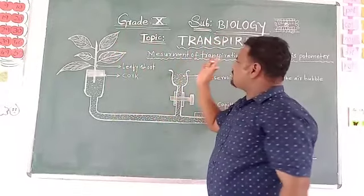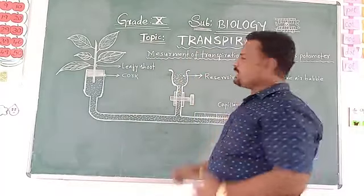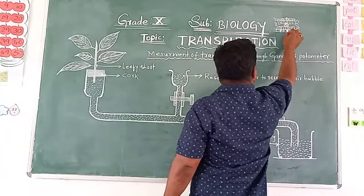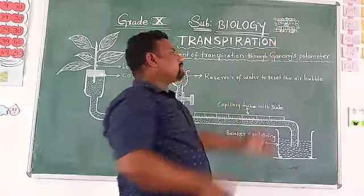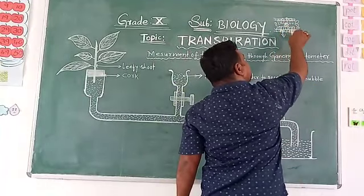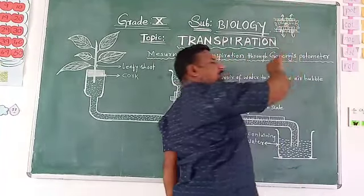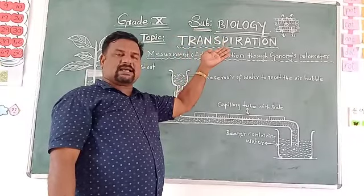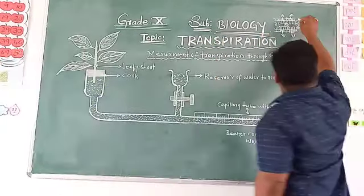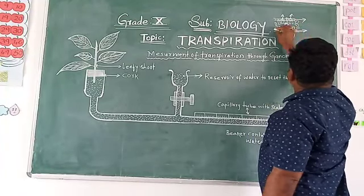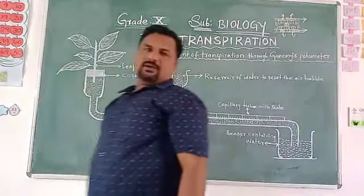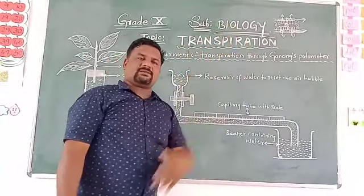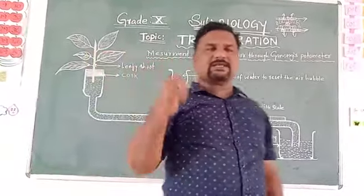Now we are here to discuss transpiration further. In the leaf transverse section, we can see the opening of stomata on both the upper epidermis and lower epidermis, with guard cells visible on the epidermal layer. Stomatal transpiration occurs through stomata. Cuticular transpiration occurs through the cuticle — where the cuticle cells are involved.